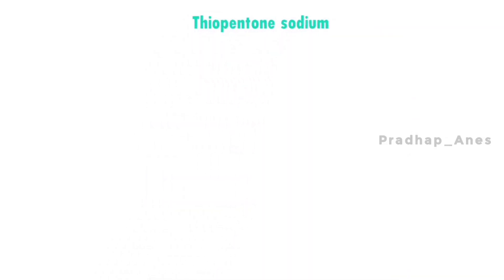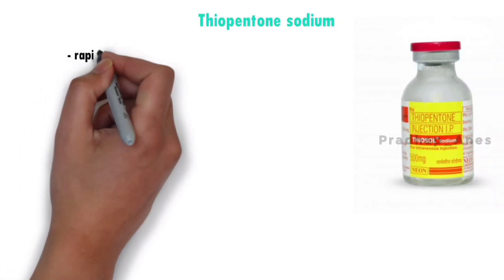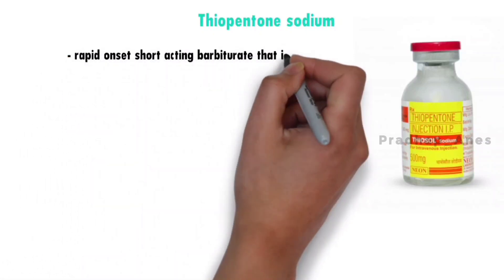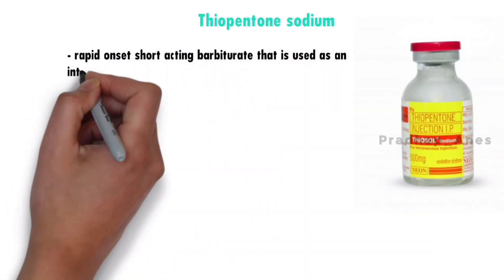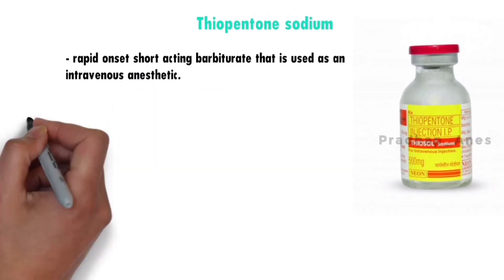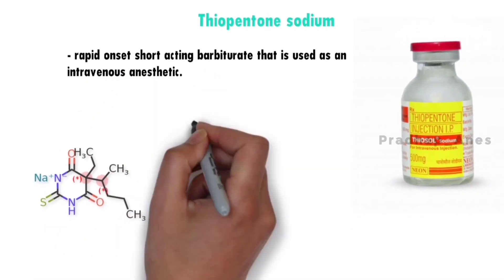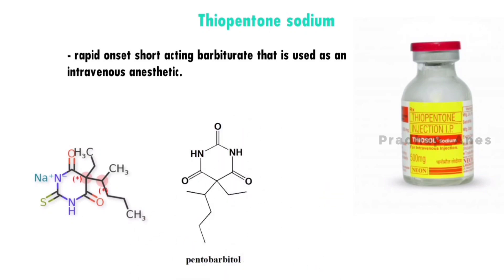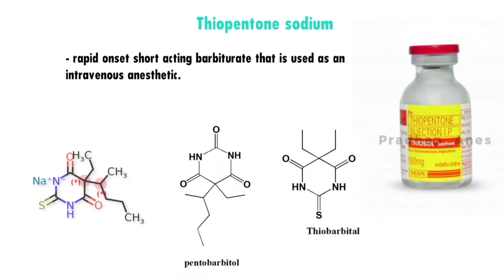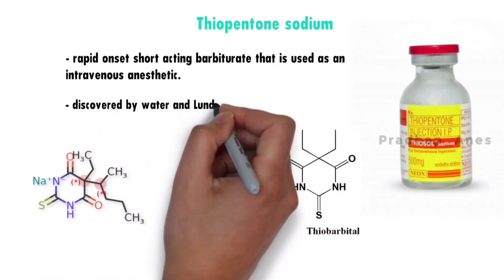Thiopentone, also known as sodium thiopental, is a rapid onset, short-acting barbiturate that is used as an intravenous anesthetic. It is the thiobarbiturate analog of pentobarbital and an analog of thiobarbital. It was discovered by Waters and Lundy in 1934.